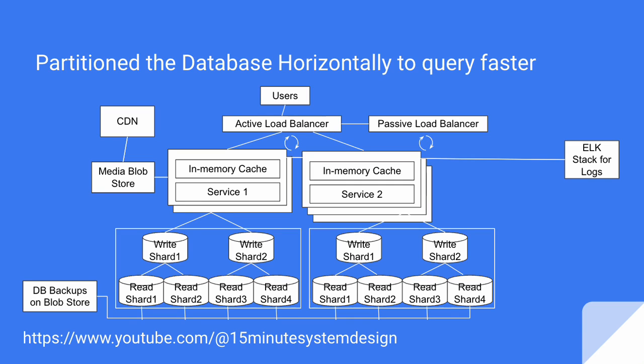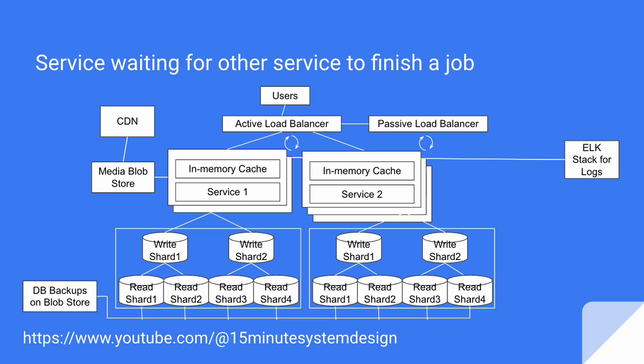Now we have multiple write shards with data being replicated to read shards as well. This sharding gives us enough power to handle millions of active users. That's why we have partitioned the database horizontally — to make our queries execute faster.